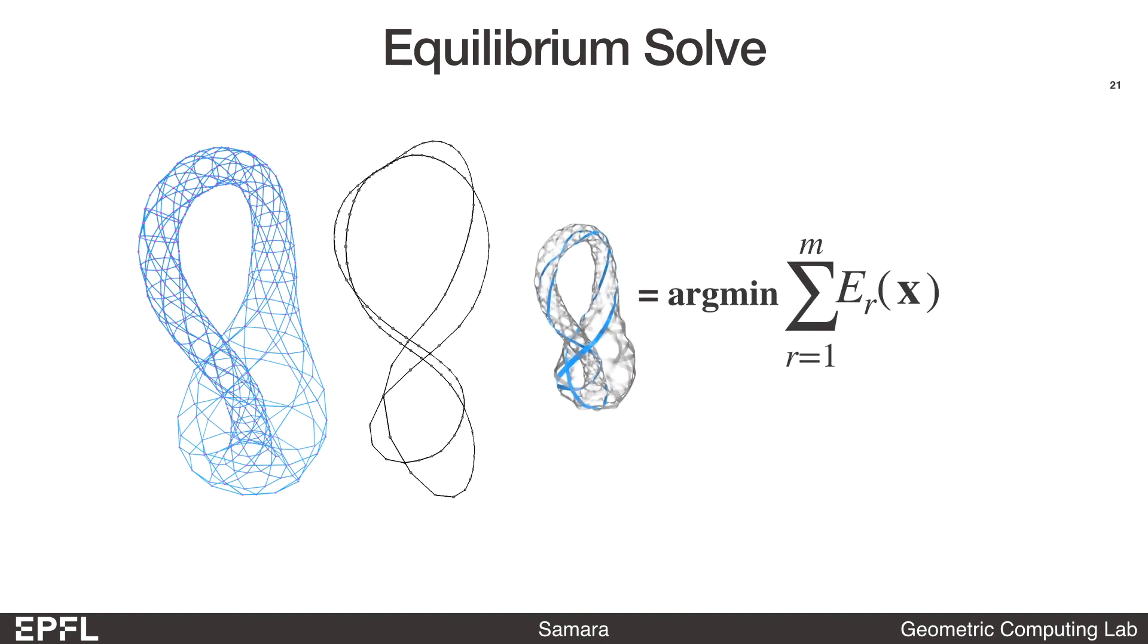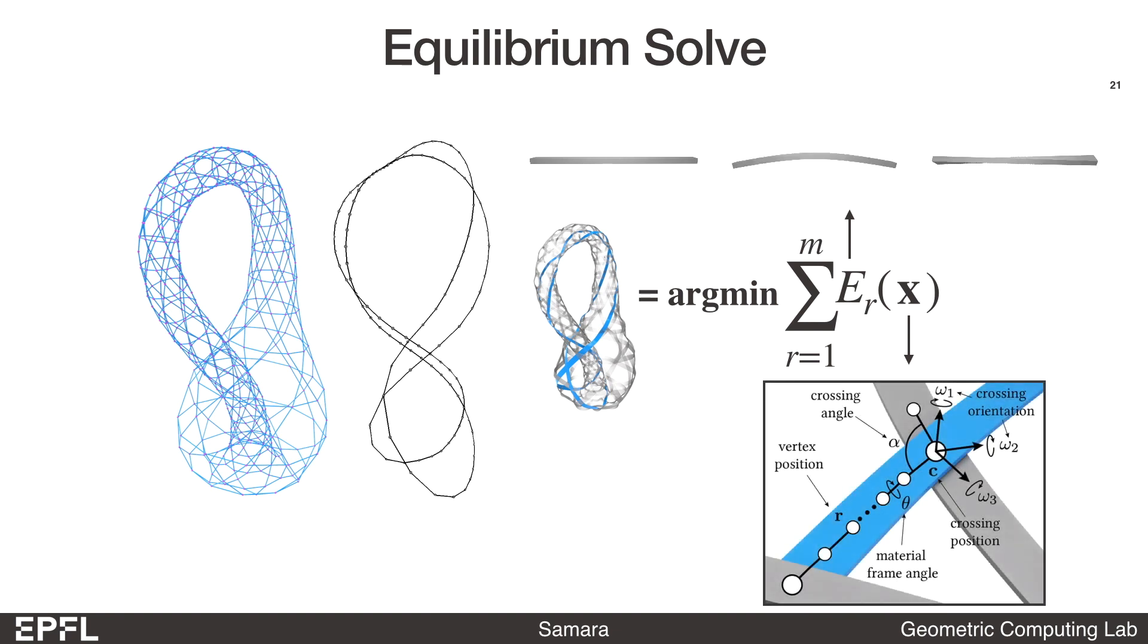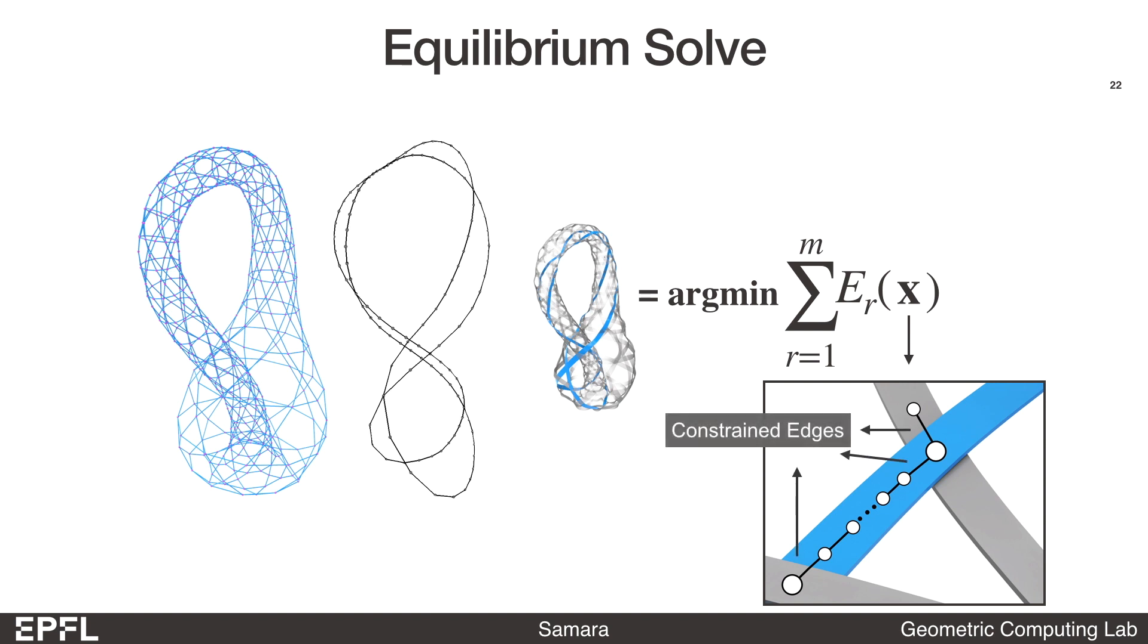We can then find the equilibrium state of the initial woven structure. This is done by minimizing the elastic energy of the structure, which is just the sum of elastic energy in all ribbon segments. The vector x contains all the simulation variables. We could implement the crossings directly as equality constraints. For example, the ribbon's material frame normal should align with the crossing's normal, and the endpoint position should be the crossing position plus the interlacing offset. However, this constraint problem would be too expensive to use in the later inverse design optimization. Instead, we use a reduced representation where the end edges of the ribbon segments are directly configured by the crossings, and only the internal edges are free variables.